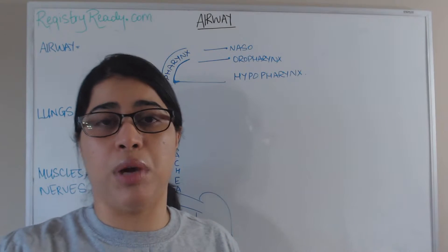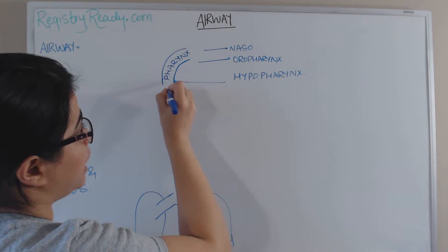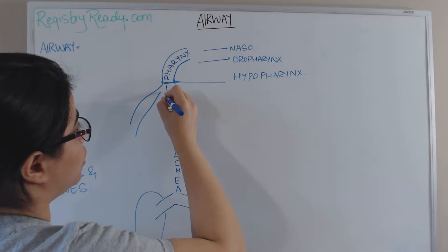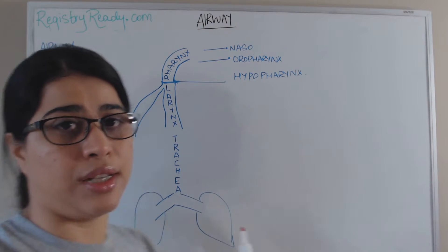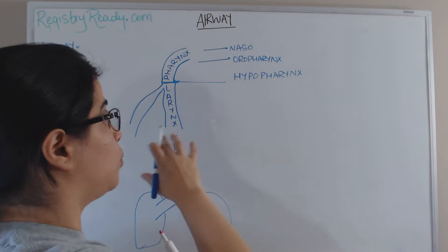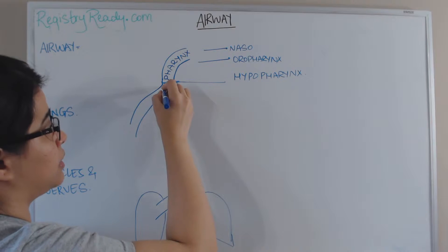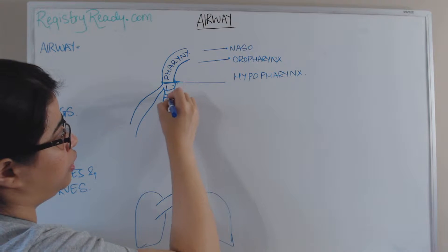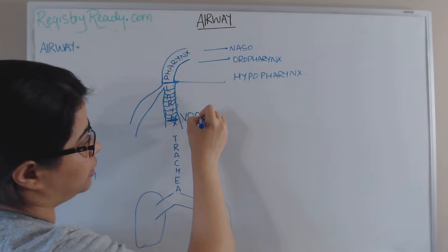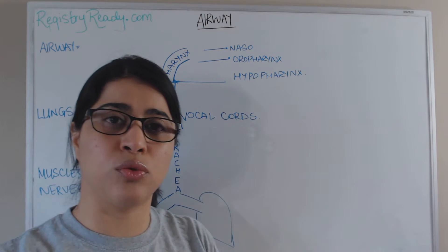We also eat from the mouth, so where does this food go? This food also enters the hypopharynx. At the base of the pharynx, at the level of the hypopharynx, the pharynx divides into two tubes. Anteriorly it continues as the larynx, and posteriorly it continues as the food pipe, which we know as the esophagus. The larynx is made up of a number of cartilaginous rings, at the base of which there is an opening known as the vocal cords.